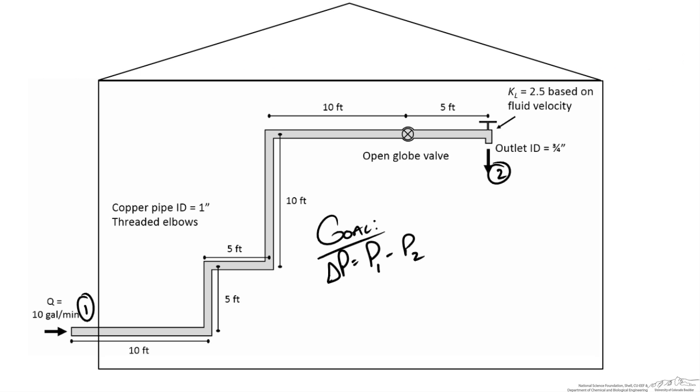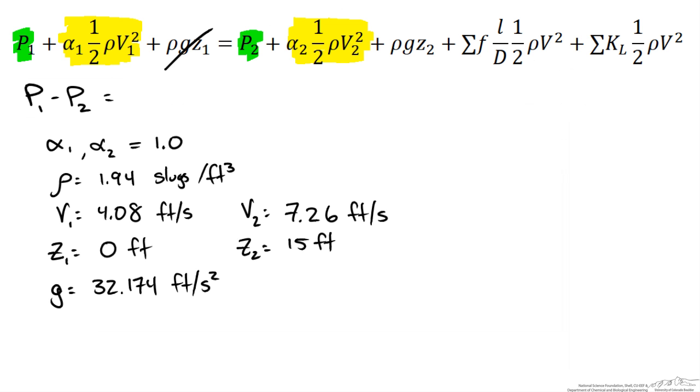So the elevation at point 2 is just the height at point 2 relative to our elevation 0 at point 1. So you can see that we have 5 feet high here, 10 feet high there, so the height of 15 feet. And now we know everything we need to for that term.